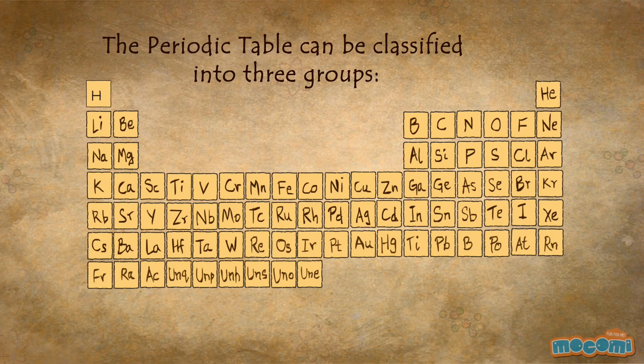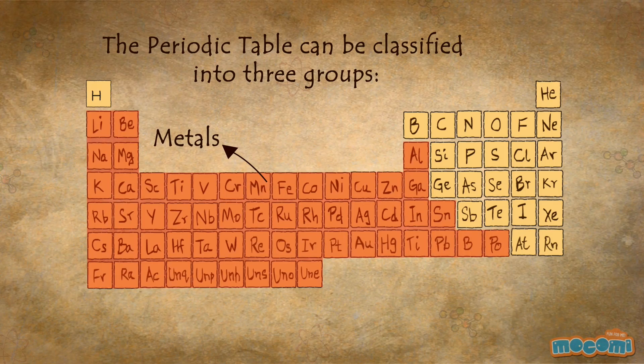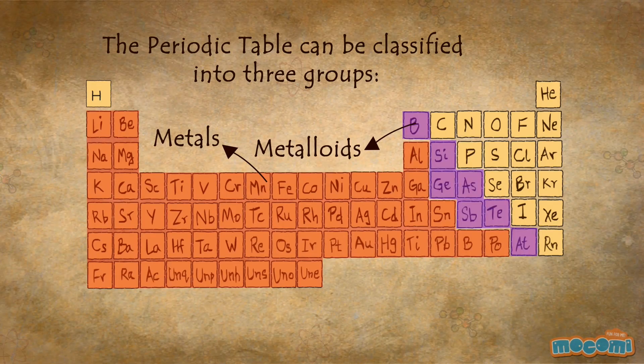The periodic table can be classified into three groups: the metals, the metalloids and the non-metals.